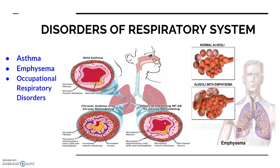Asthma is a difficulty in breathing caused by wheezing — wheezing is the sound that comes out during breathing — due to inflammation of the bronchi and bronchioles. Here you can see this fibrous layer; deposition takes place in the inner airways, with very minimal muscle thickness and minimal mucus secreted.